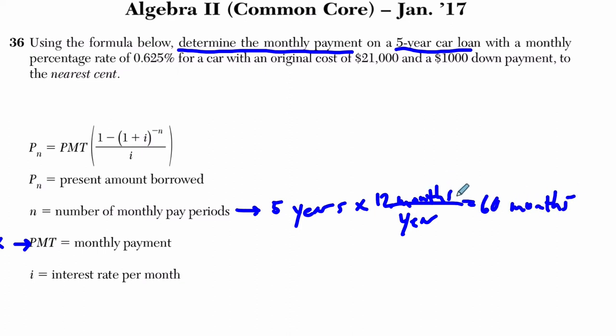Alright, so they're saying 60 months because we're going to have monthly periods with a monthly percentage rate of 0.0625%. Now, the interest rate per month, you might infer this, but I'll just tell you, it's always going to be in a decimal form. So this is the percentage form, so we divide by 100, it's going to be 0.00625.